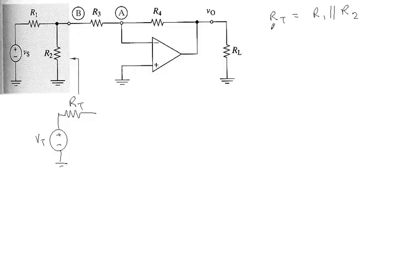It is quite clear that RT is the parallel connection between R1 and R2. Hence, RT equals R1 R2 divided by R1 plus R2.